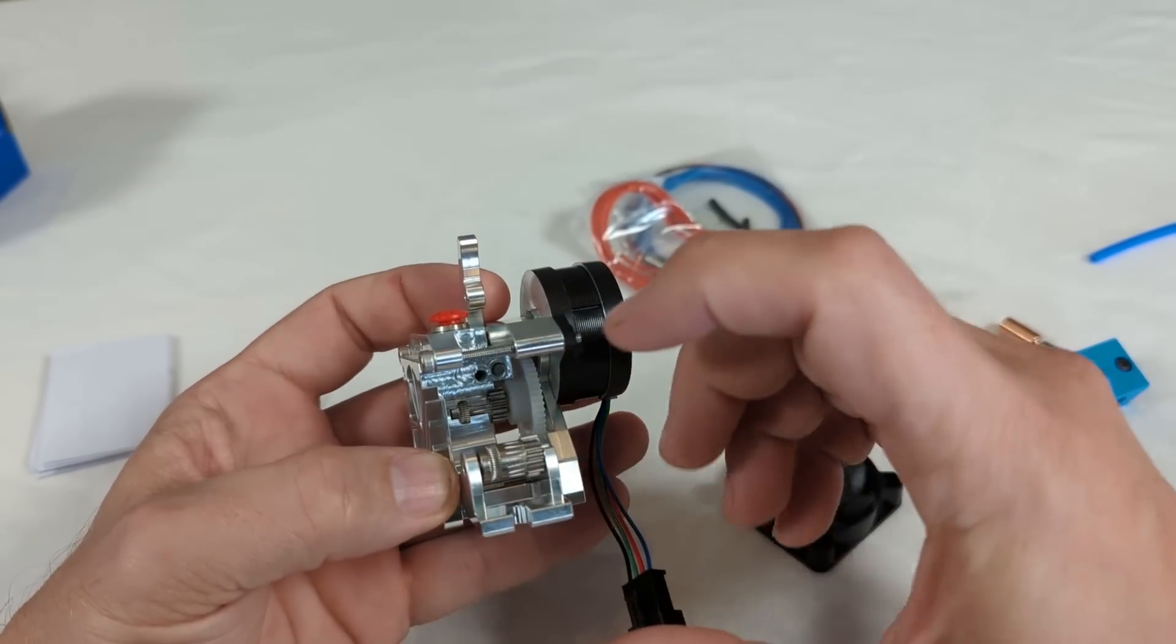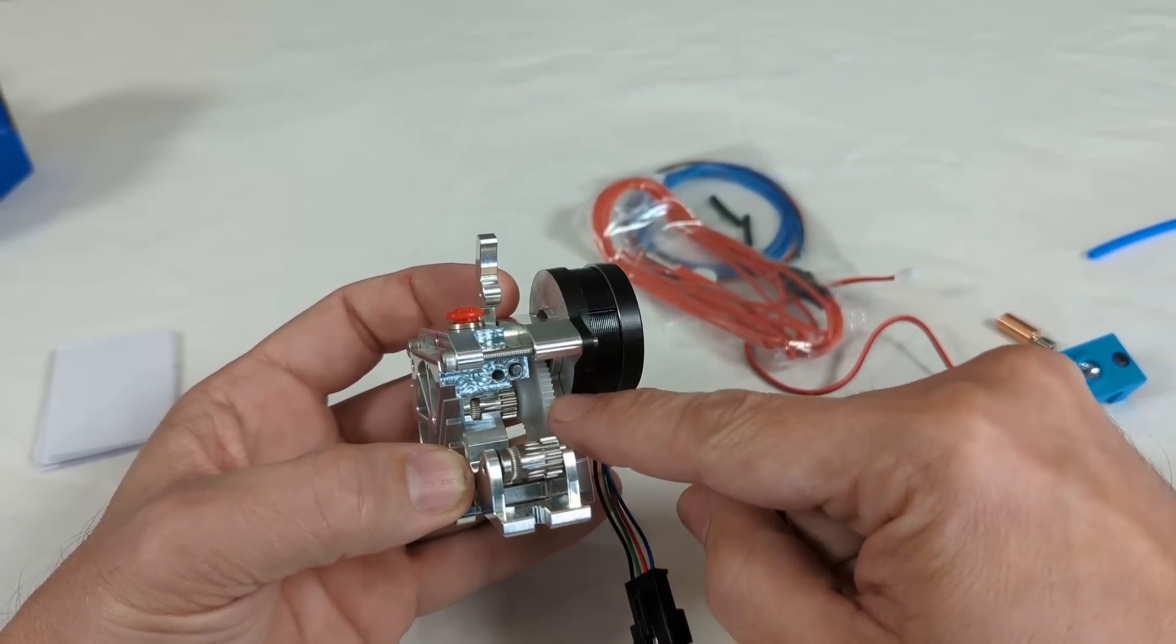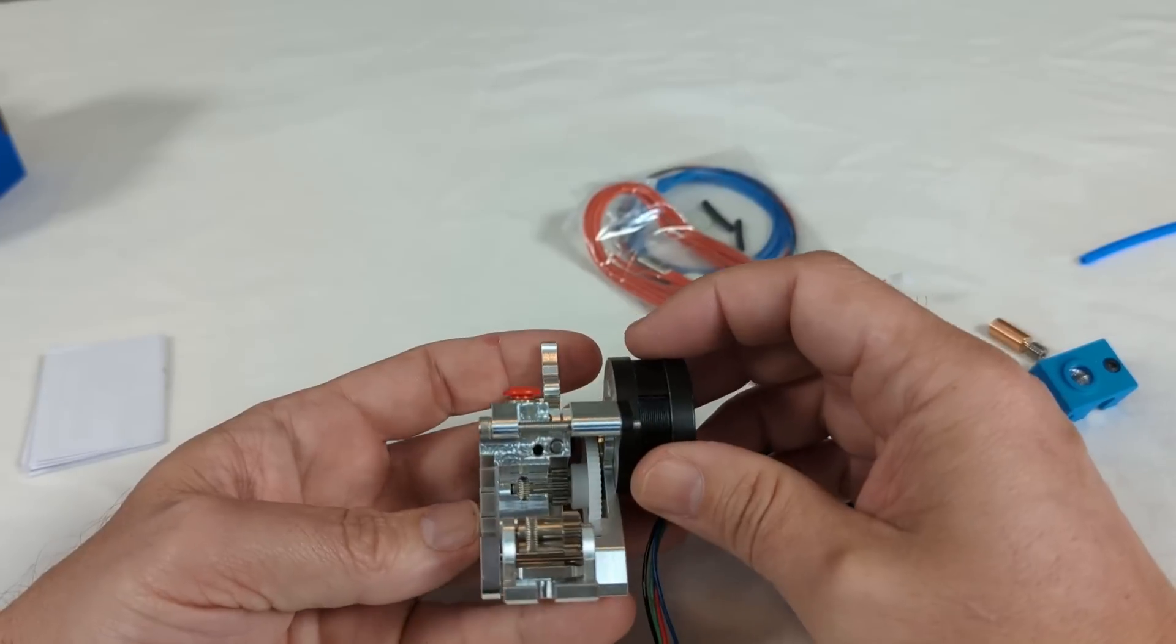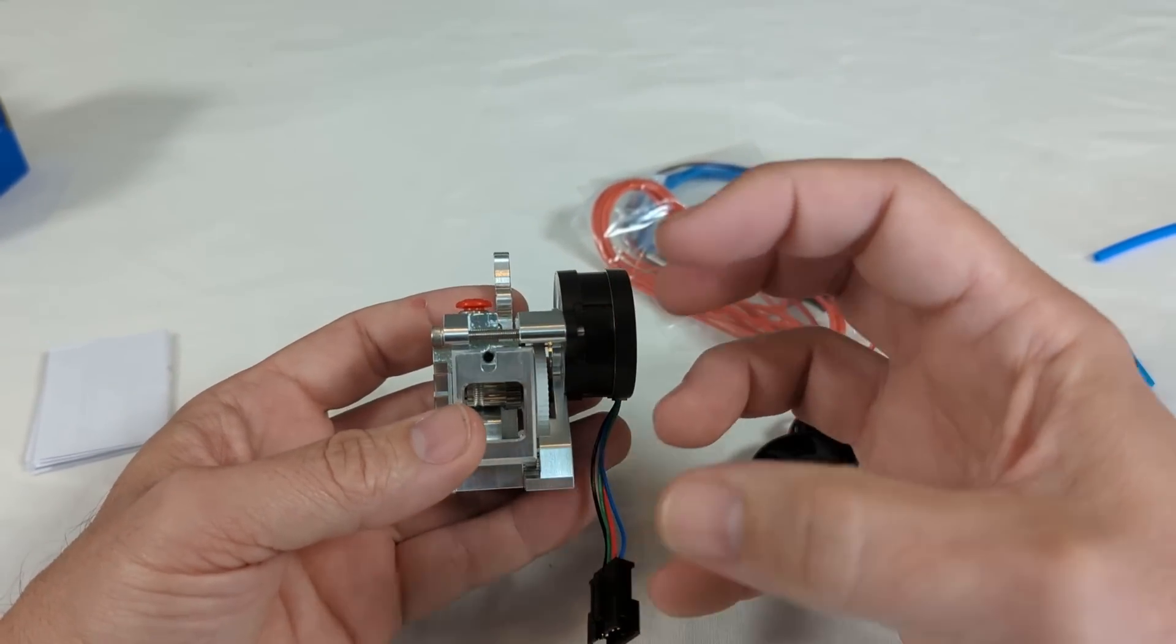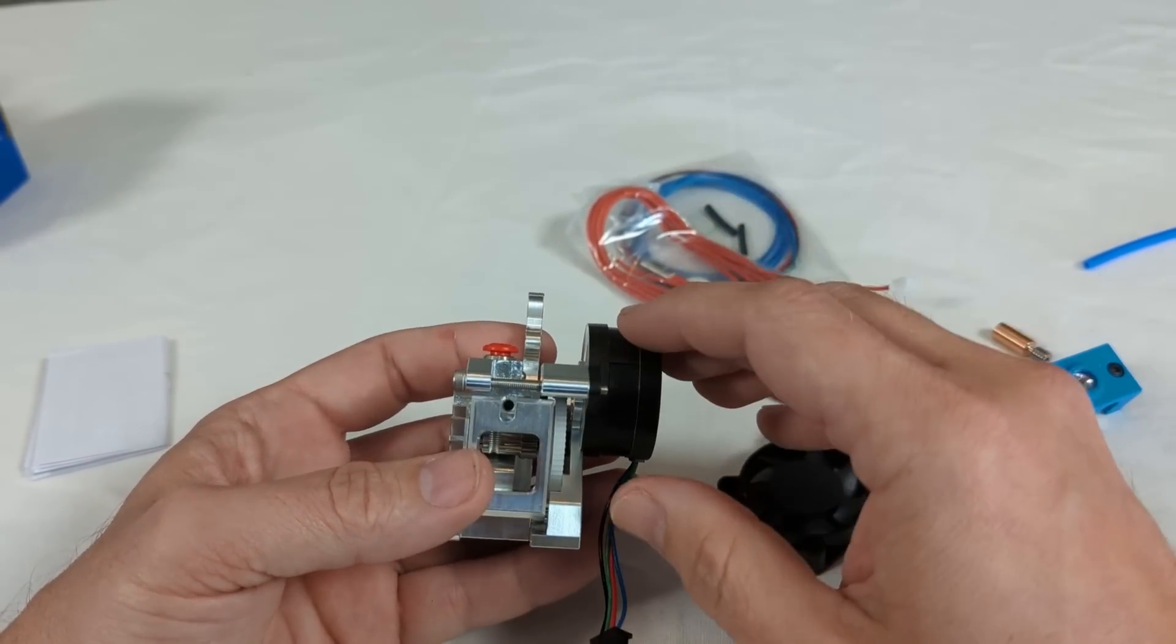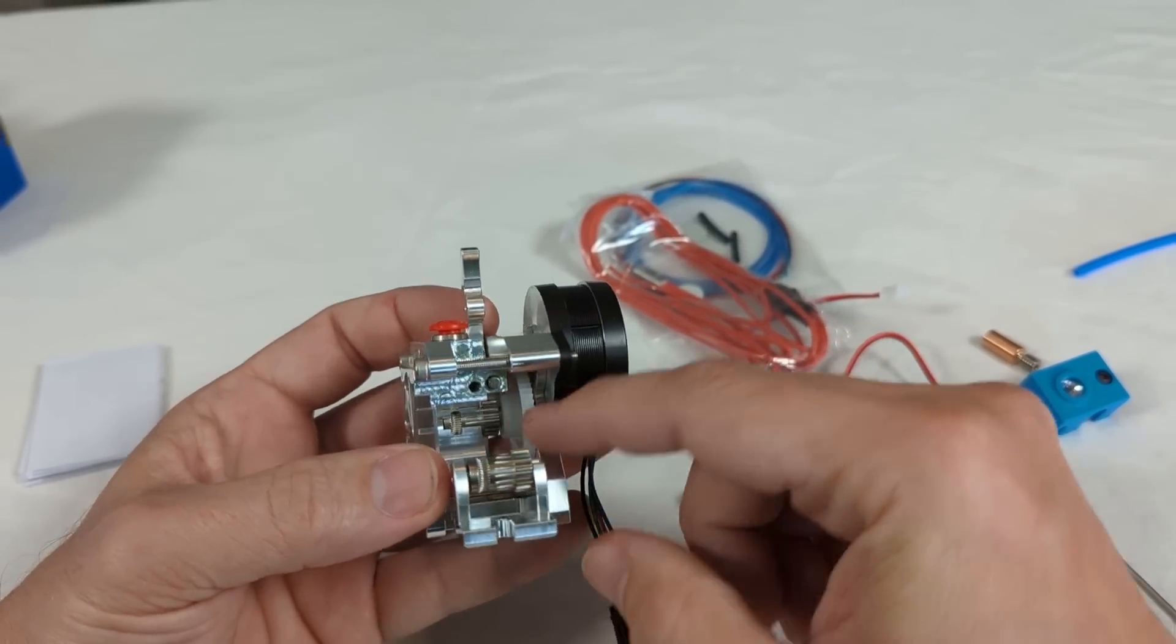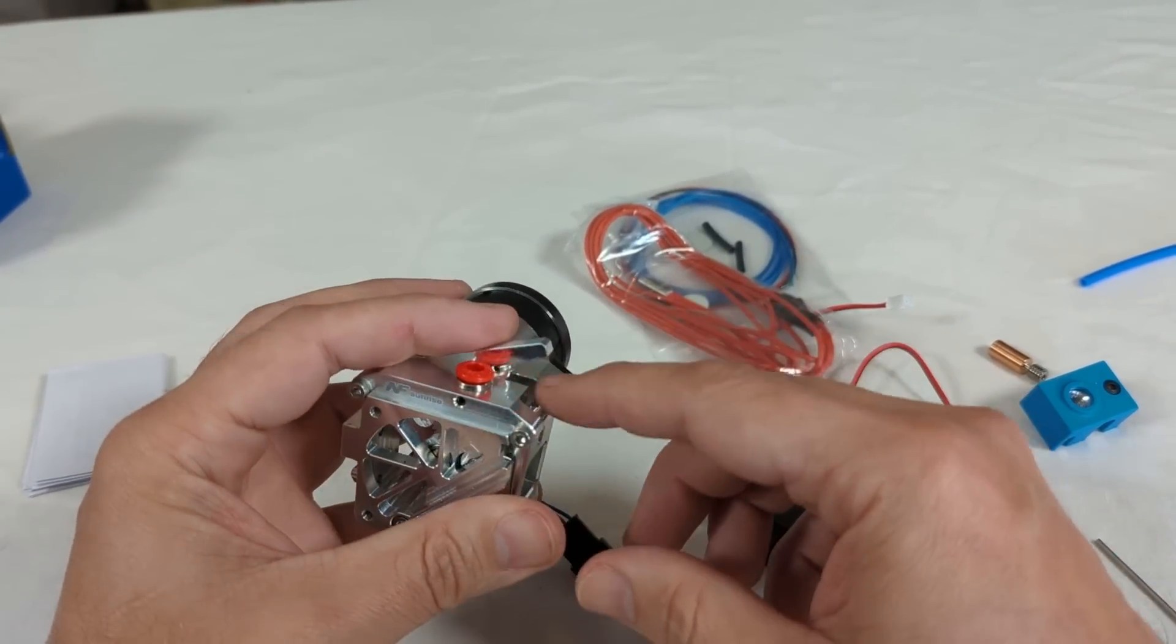The most disappointing thing about this entire extruder that I'm seeing is that plastic gear. So disappointing. This whole thing is metal so you can put it in a heated chamber and not worry about things going south. Metal doesn't warp and deform in a medium heat environment. You have to get it really hot until it starts to have problems with that. And to see a plastic gear in an otherwise all metal extruder is really disappointing.